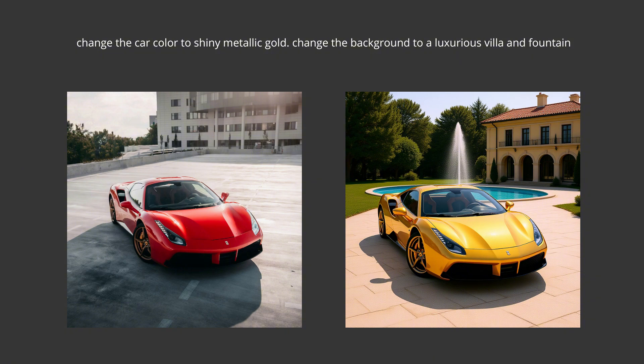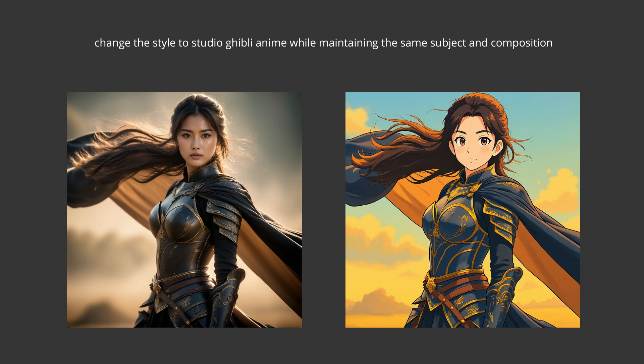Now let's go over some of the example images and prompts. The first one is: change the car color to shiny metallic gold, change the background to a luxurious villa and fountain. The car has changed color, stayed in the same place, and the background has changed as well — it's done a pretty good job on this one. The next one is: change the style to Studio Ghibli anime while maintaining the same subject and composition. This style transfer from photorealistic to Studio Ghibli worked well. It kept all her armor details, trimming, the cape, and the composition.